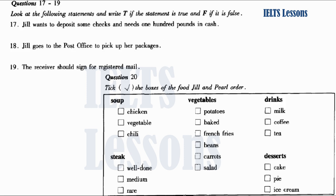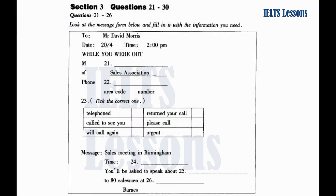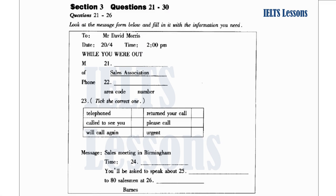That is the end of section two. Now you will have half a minute to check your answers. Now turn to section three. Mr. Bob Ross called while Mr. David Morris was not in the office. His secretary answered the phone and took a message for him. As you listen to the phone call, look at the message form and fill it in with the information you need. First, you will have some time to look at questions 21 to 26.